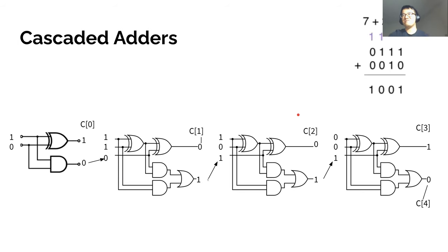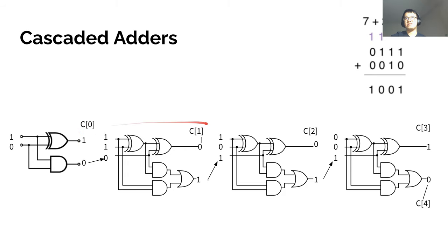From this we can make longer cascaded circuits. In our example of 7 plus 2 equals 9: first we start with the lowest position - 1 plus 0 gives us 1 with a carry out of 0, which we cascade into another full adder. That sums the next two bits plus the carry in. We just keep doing this process over and over, and when you take the individual sum bits you get 1001, with an extraneous carry out bit. You can repeat this process as many times as needed, or until you run out of space.